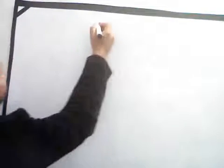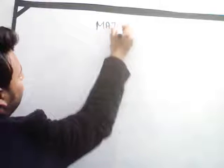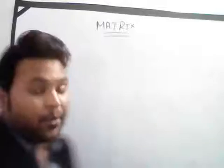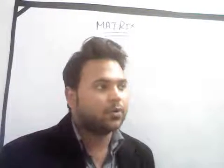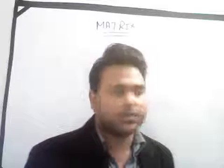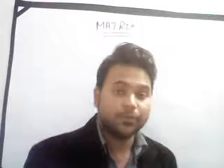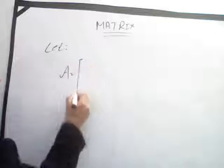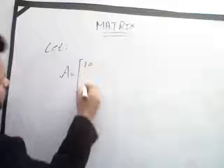Hello everyone, I am Saad. Today we discuss what is a matrix and how to find the order of a matrix. A matrix is a combination of numbers in the form of rows and columns. For example, matrix A equals 10, 20, 55, and 60.